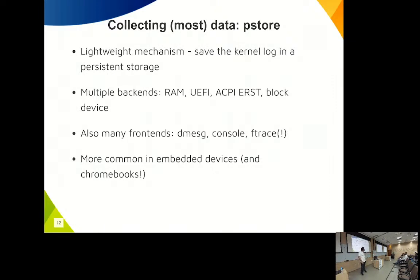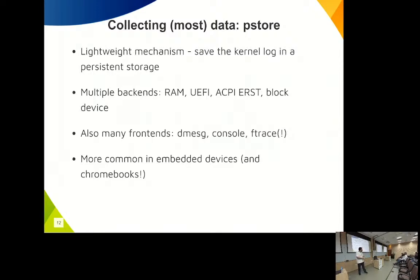pstore has multiple frontends beyond just the console log: you can dump ftrace output (Linux's tracing mechanism — similar to FreeBSD's tracing), user-space pmsg, and more. Backends include EFI variables (small but no memory reservation needed), ACPI/ERST (the ACPI error facility in x86), and recently a block device backend was added. The EFI backend requires no RAM reservation at all since EFI has its own storage area.